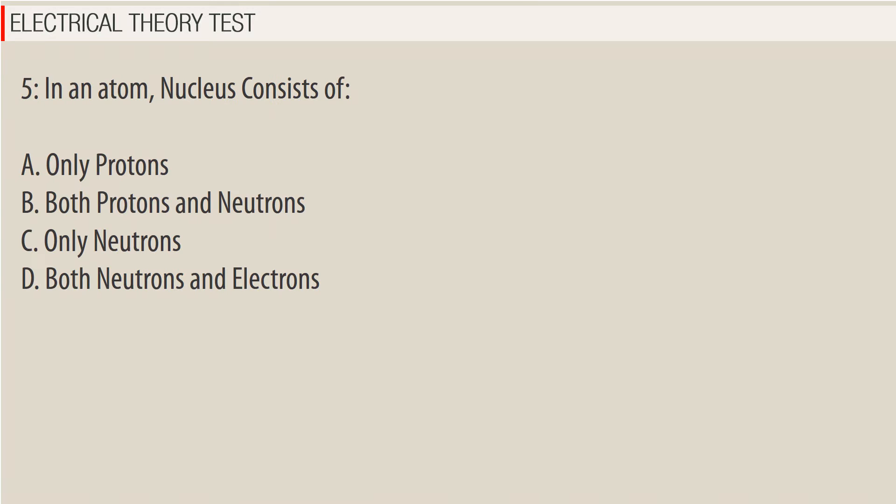Question 5: In an atom, the nucleus consists of: A. Only protons. B. Both protons and neutrons. C. Only neutrons. D. Both neutrons and electrons.